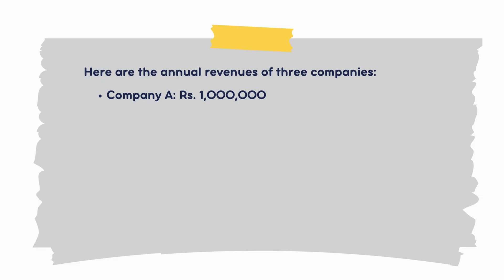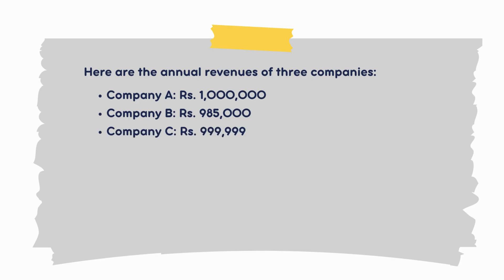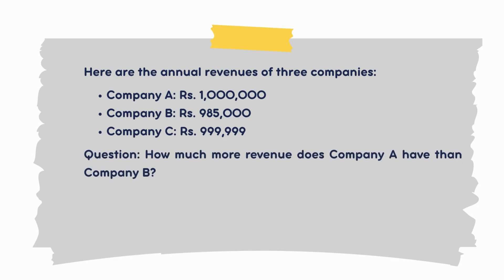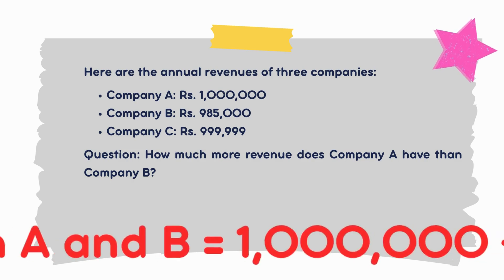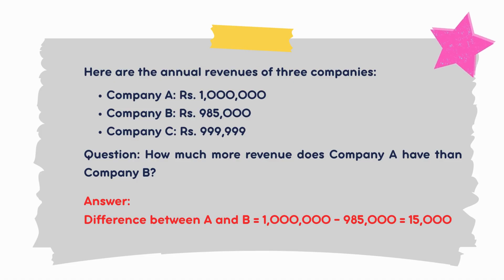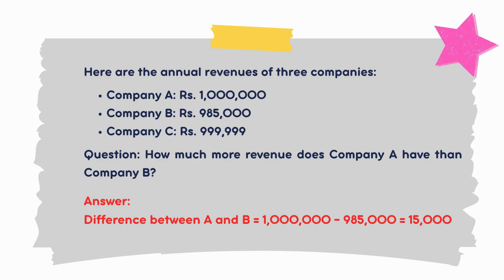Here are the annual revenues of three companies: Company A — rupees 1,000,000; Company B — rupees 985,000; Company C — rupees 999,999. Question: how much more revenue does Company A have than Company B? Answer: difference equals 1,000,000 minus 985,000 equals 15,000. So Company A has rupees 15,000 more than Company B.